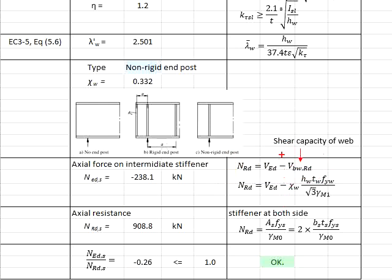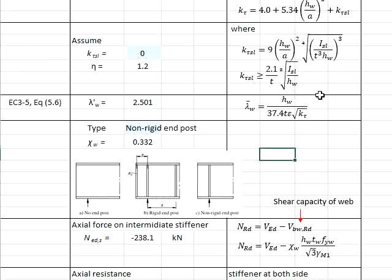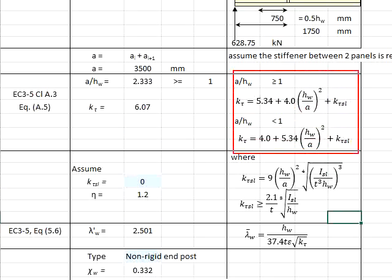To obtain the shear resistance of the web, you require chi_w. The chi_w is obtained from Table 5.1 in EC3 Part 5. Based on the table, you require lambda_w, and this lambda_w requires k_knot. Therefore, we have to search for k_knot.